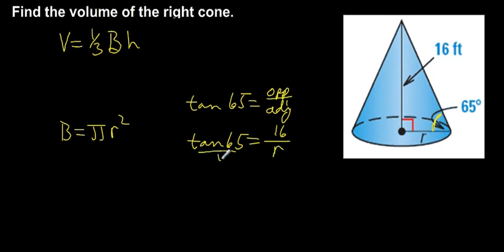If I make this into a proportion, cross-multiply and divide, I can see that my radius is going to be equal to 16 divided by the tangent of 65 degrees. 16 divided by the tangent of 65 degrees comes out to be approximately 7.46.